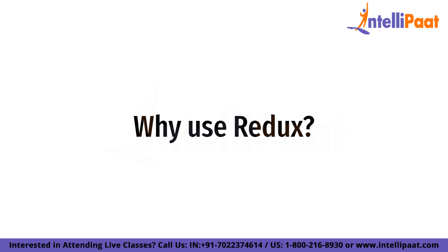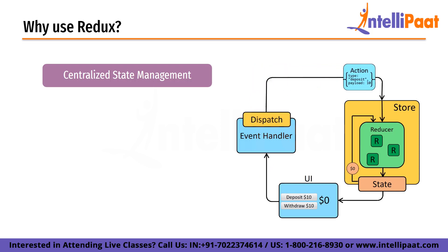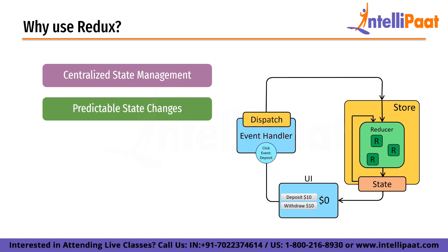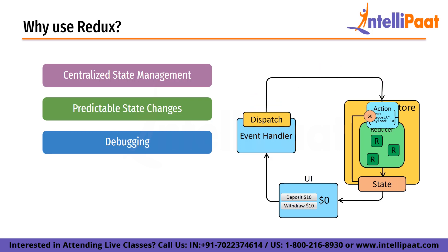Now we look at why use Redux. There are several reasons why someone might choose to use Redux. The first is centralized state management. Redux provides a single centralized store for all the state in the application, which makes it easier to reason about how data is flowing through the application and debug issues. Second is predictable state changes. Redux uses a strict set of rules for how state can be updated, which helps ensure that changes to the state are predictable and consistent across the entire application. Third is debugging. Because Redux keeps track of every action that has been dispatched and every change that has been made to the state, it makes debugging easier and more predictable.